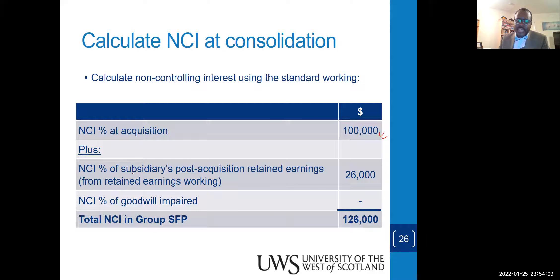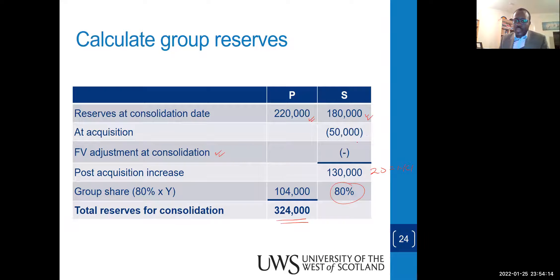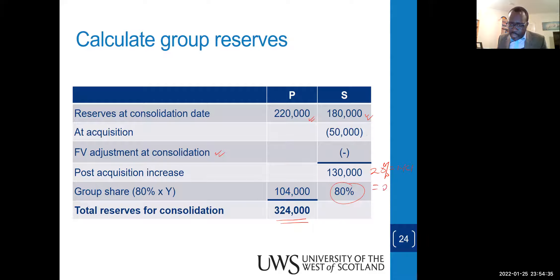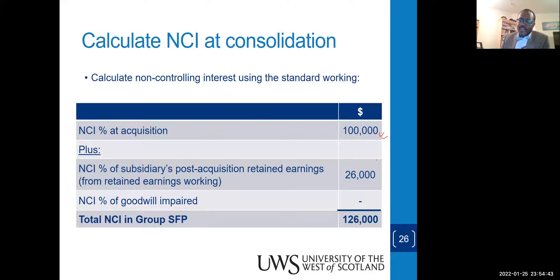The NCI fair value is 100,000. The post-acquisition reserves were 130; the NCI's 20% share is 26,000. We add the 26,000. There is no goodwill impairment, so nothing to subtract. The NCI total comes to 126,000, which is represented as other equity in the statement of financial position.